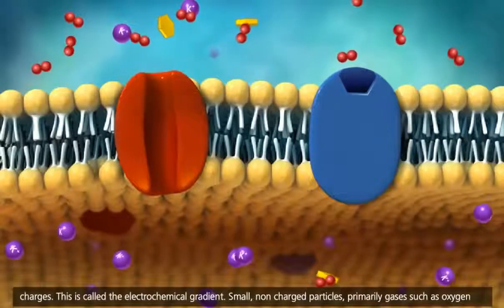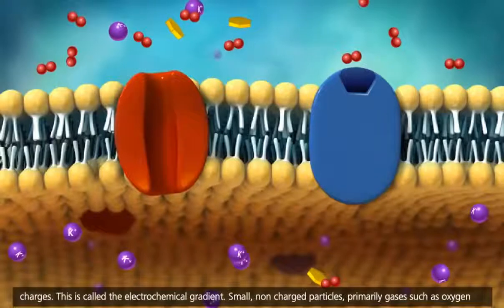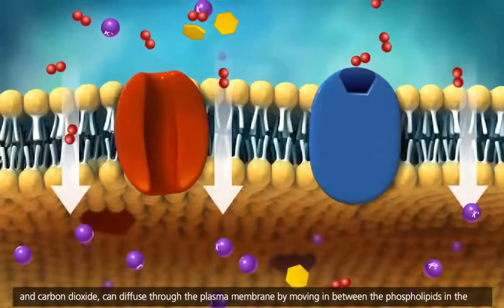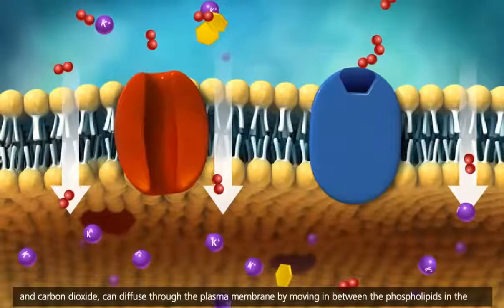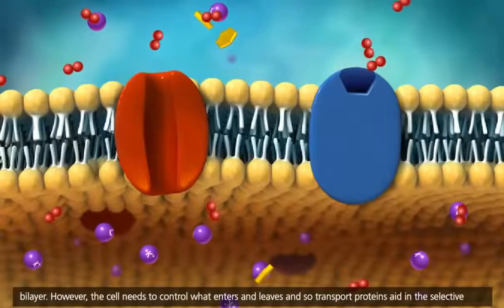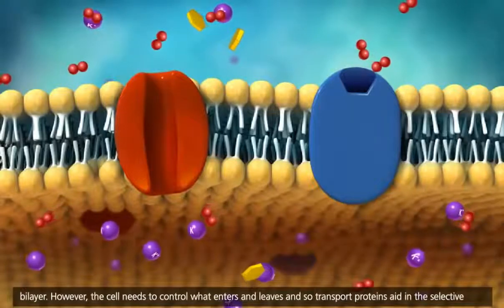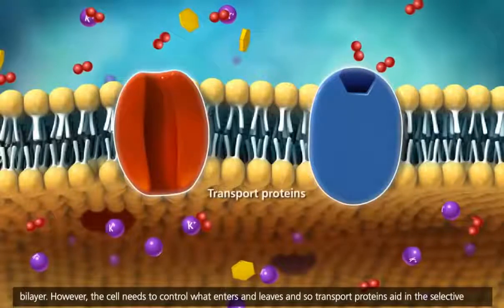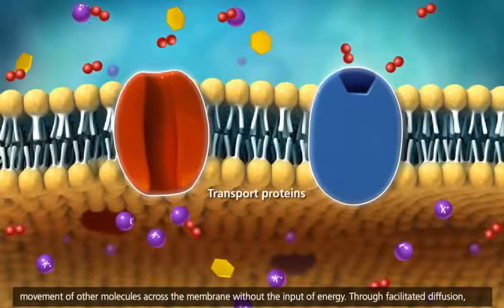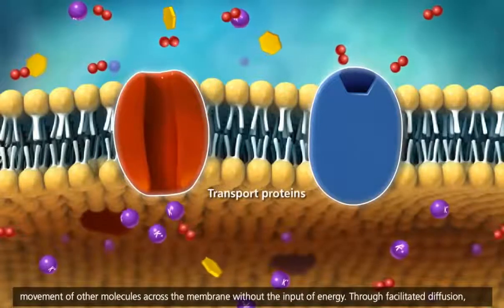Small, non-charged particles, primarily gases such as oxygen and carbon dioxide, can diffuse through the plasma membrane by moving in between the phospholipids in the bilayer. However, the cell needs to control what enters and leaves, and so transport proteins aid in the selective movement of other molecules across the membrane without the input of energy.